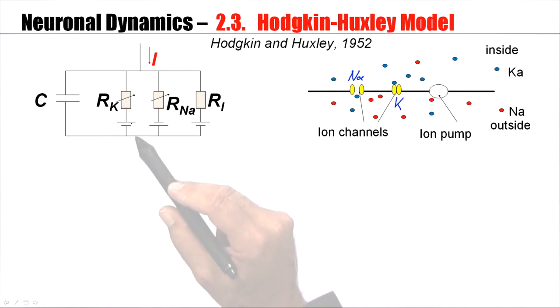So, the idea is that the potassium channel corresponds to a certain resistance, which may change. The arrow indicates that this may change depending on the current situation, depending on whether the channel is opened or closed. Similarly, the sodium channel corresponds to a certain resistance, and the remaining channels are summarized in some kind of leak channel.